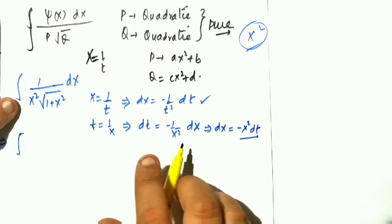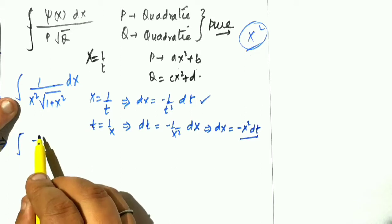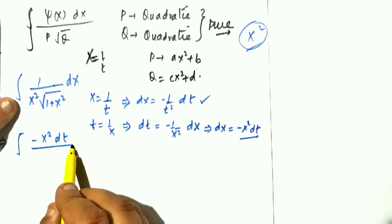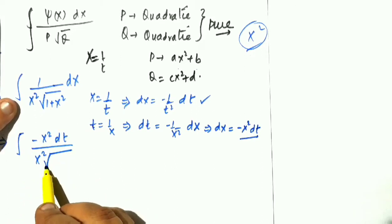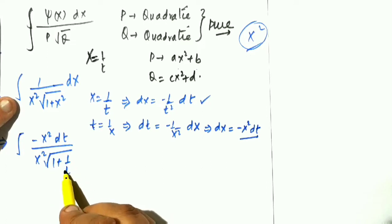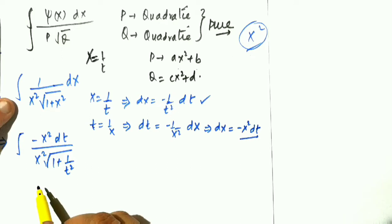So x is 1 by t, therefore it will become 1 plus 1 by t square. And you can look from there, from here, that x square will be cancelled. So only this one will be remaining.